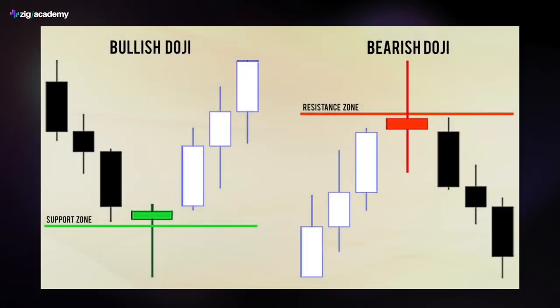Then we have another pattern called dojis — bullish doji and bearish doji. They may not be as reliable as the previously presented pairs, so keep that in mind. Dojis are known for having little to no body, so the wicks are generally more or less equal in length, both top and bottom. But it's not a 100% rule. As you can see on the left side, with the bullish doji we have a long lower wick and just a little of the top price action, making the body the center of the candlestick formation. With the bearish doji, we have similar length top and bottom wicks.